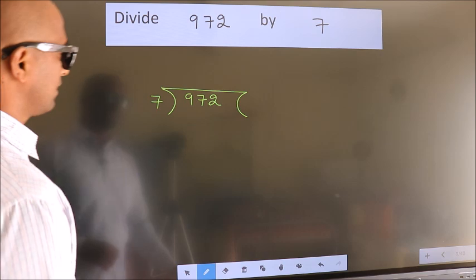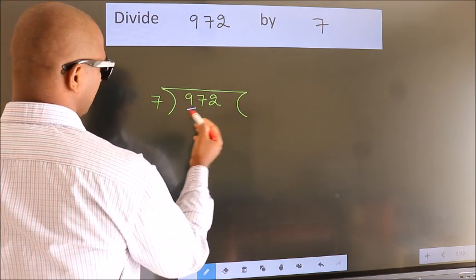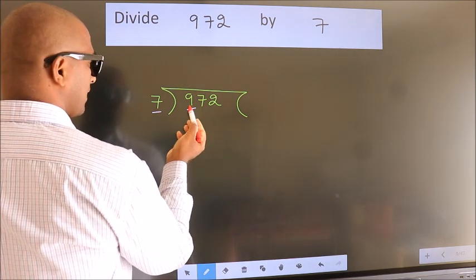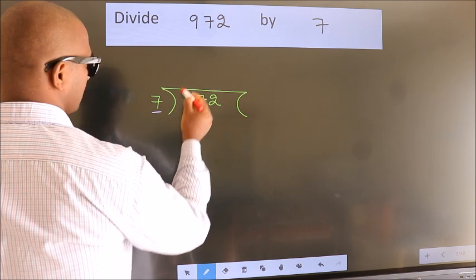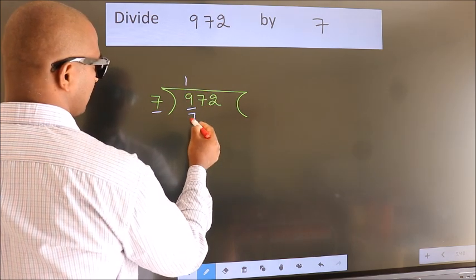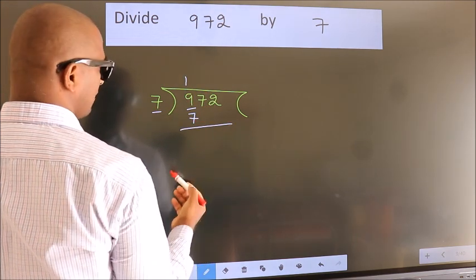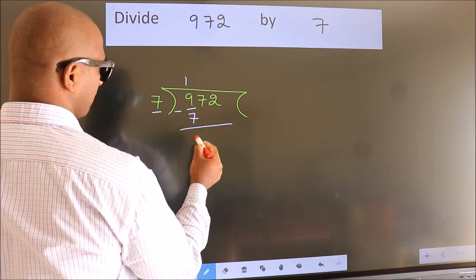Next. Here we have 9, here 7. A number close to 9 in 7 table is 7 once 7. Now we should subtract. We get 2.